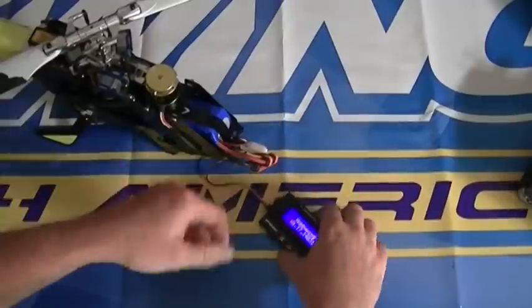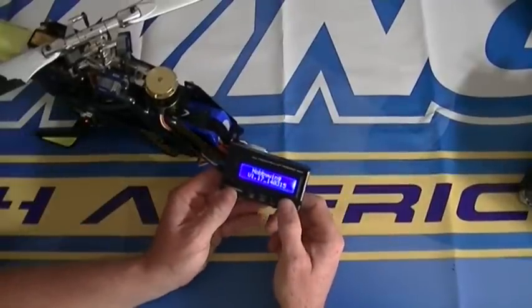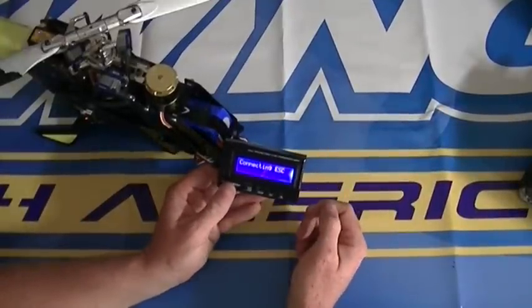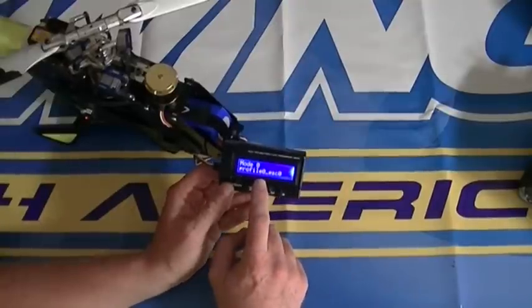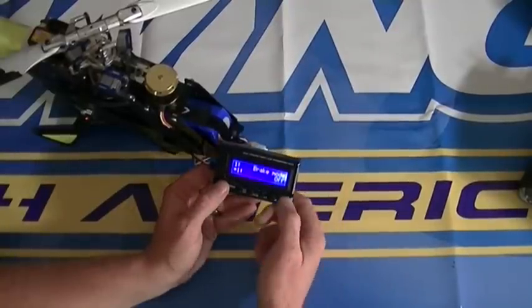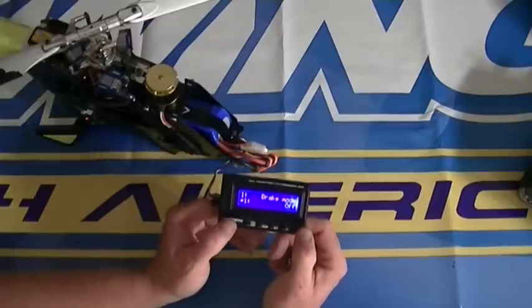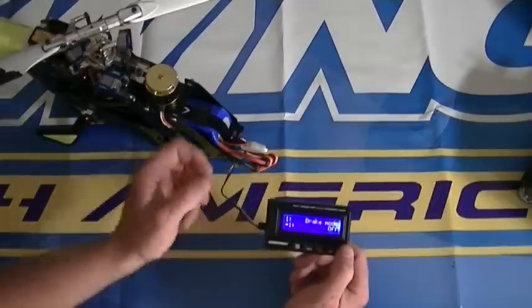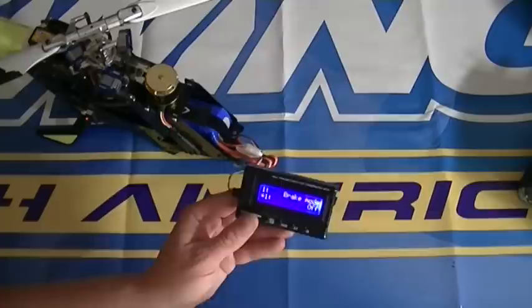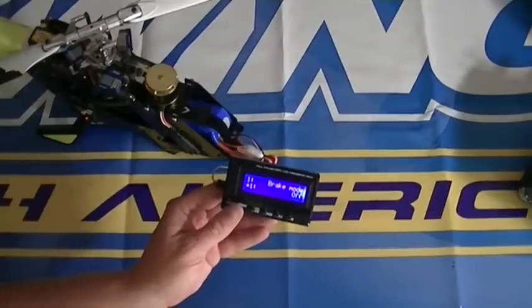So plug it in here. You're going to hit okay and it's going to say connecting. It's going to show you the software version of the ESC and it's going to go through your default settings right here. I'm going to try and zoom in without screwing anything up too bad.